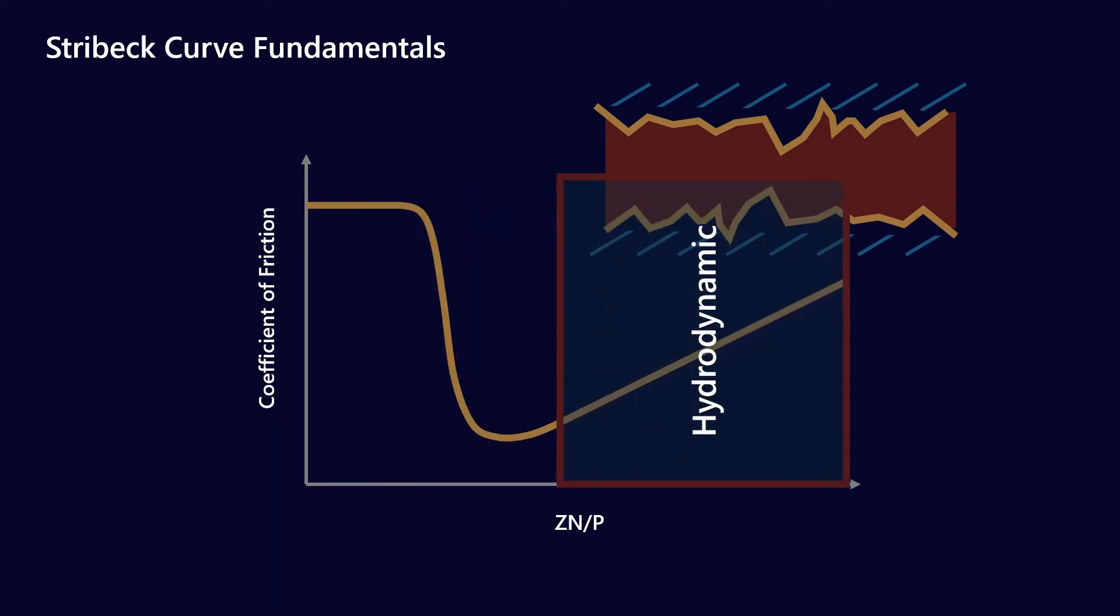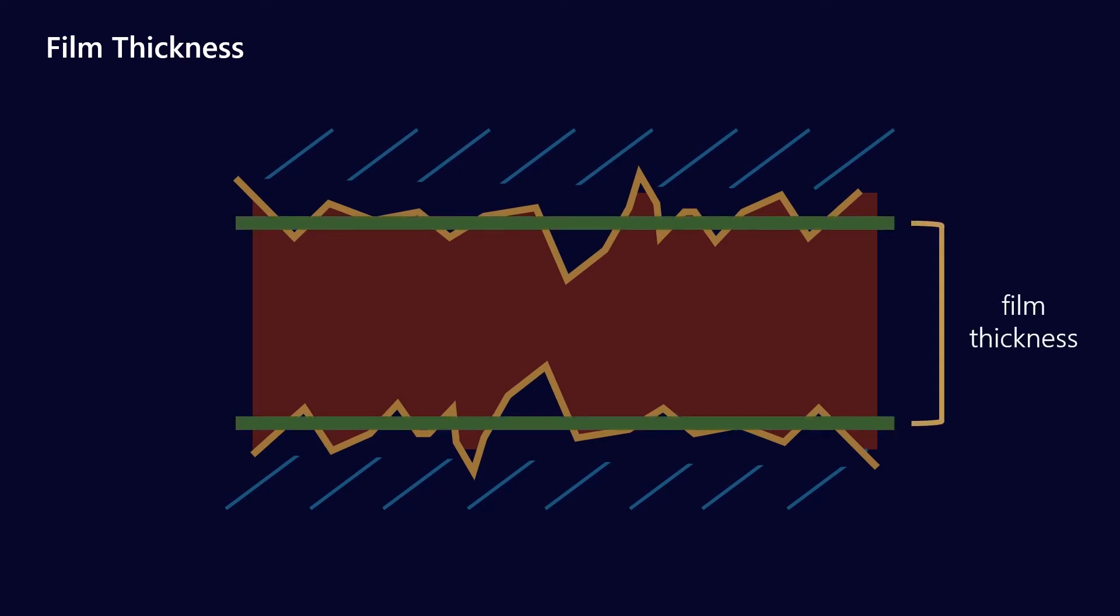When we're talking about hydrodynamic lubrication, we're talking about two loaded surfaces being supported by a film of lubricant. In this instance, the film thickness is simply this distance, taking two mean datums of the surface and measuring the distance between those. We talk about a mean datum because no surface is perfectly smooth. There are going to be asperities that are the result of machining, so we take an average of the surface. That's the film thickness.